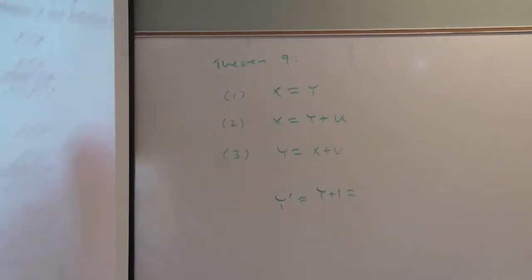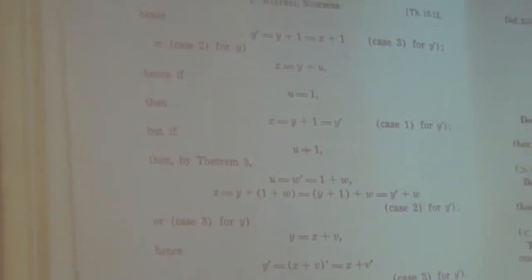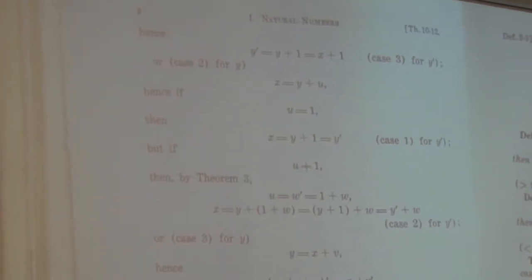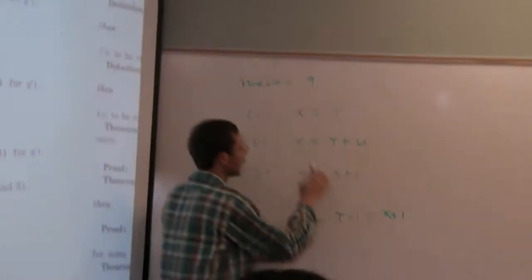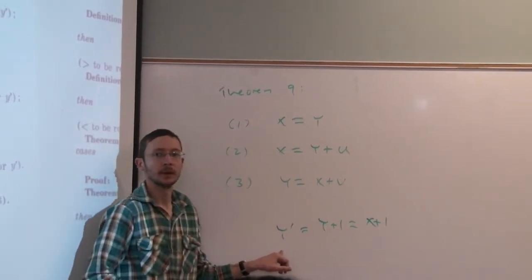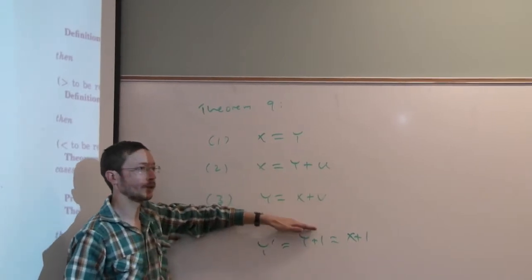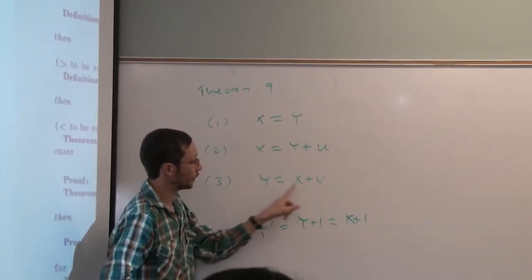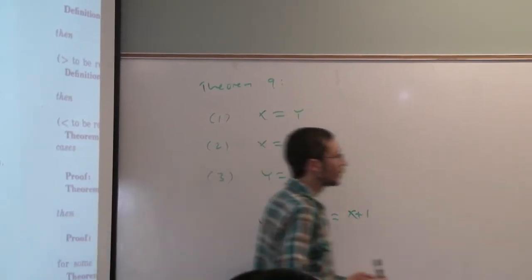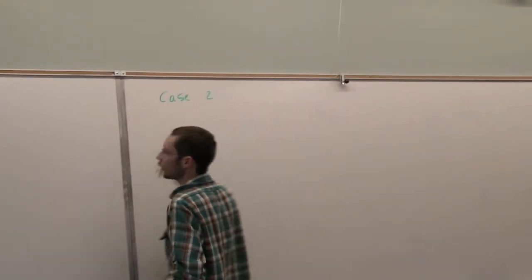Assume that x is equal to y. Then when you take y's successor, you're equal to y plus 1. But y and x were equal, so wherever you see a y you can replace it with x. So you land in Case 3, because y's successor is equal to x plus 1. We've proved that if you start in Case 1 and take y's successor, you land back in Case 3.